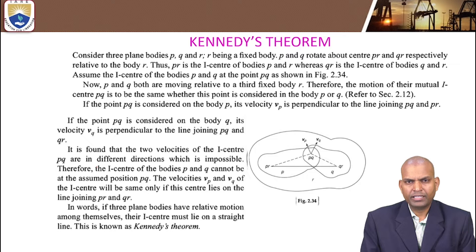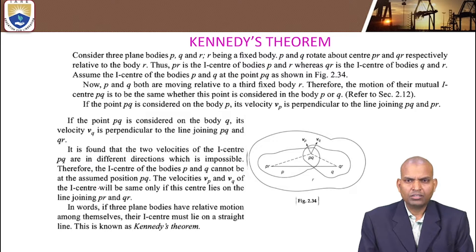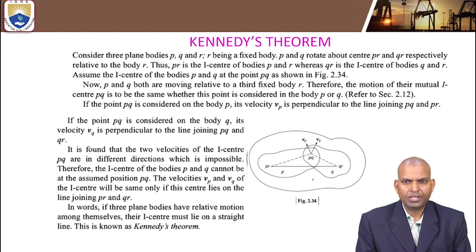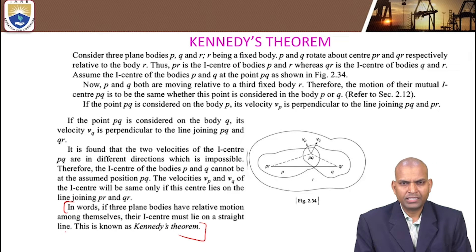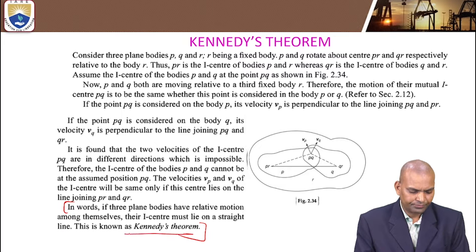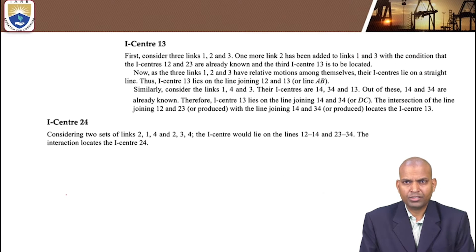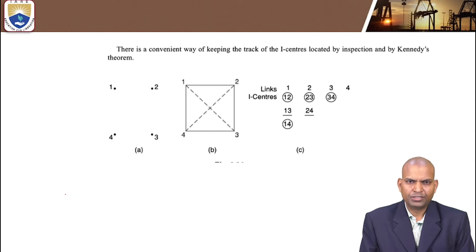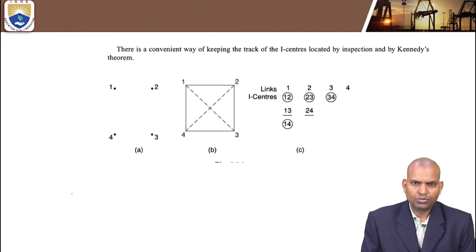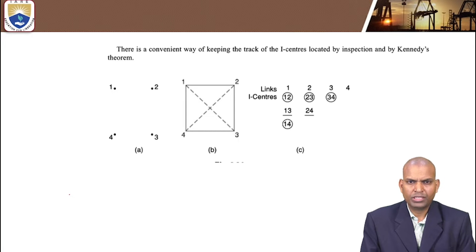In order to locate iCenters, there is a theorem proposed by Kennedy, called Arnold-Kennedy's theorem. This theorem states that if 3 plane bodies have relative motion with respect to each other, then among themselves their iCenters lie on a straight line. This is the Kennedy's theorem and it is very, very important for solving problems using the iCenter method.